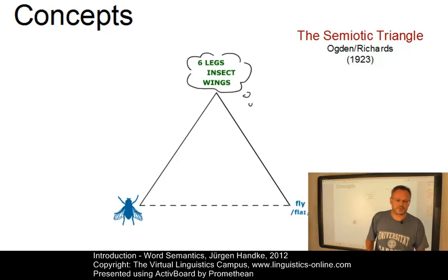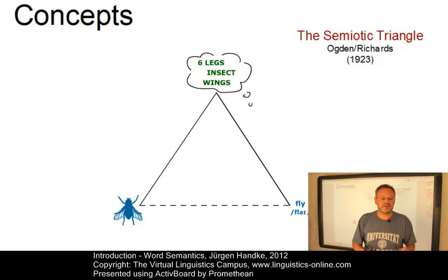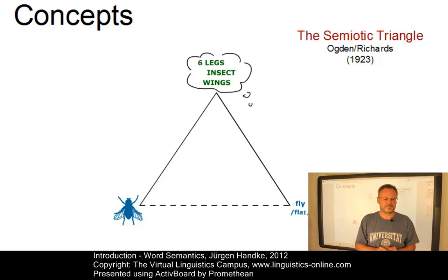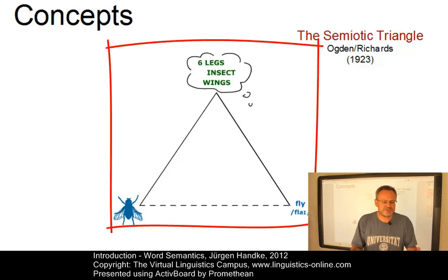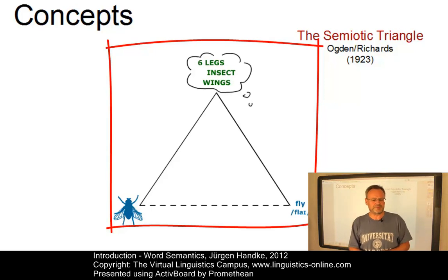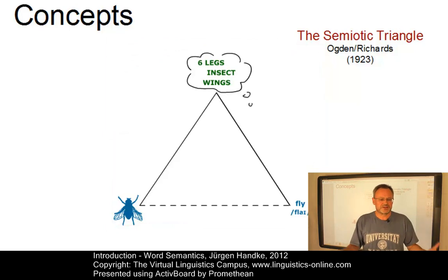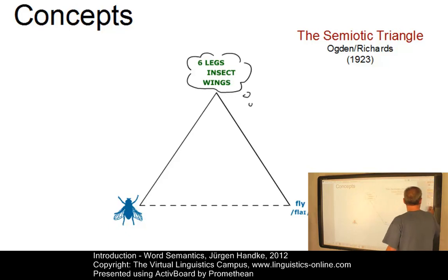The solution to the problem of explaining the nature of word meaning is to define the meaning of a word in terms of the image or concept in the speaker's or hearer's mind. This relationship can best be illustrated by means of the semiotic triangle, as introduced by Charles K. Ogden and Ivor Armstrong Richards in 1923. The idea is that words and objects may be related in several ways, and their model is referred to as the semiotic triangle.